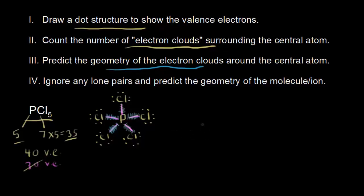Let me draw our molecule in that shape. We're going to have our phosphorus in the center with 3 chlorines on the same plane — these are called the equatorial positions because they're along the equator. Then 1 chlorine above the plane and 1 chlorine below the plane — those are called axial positions. Let me draw a slightly better trigonal bipyramidal shape here.